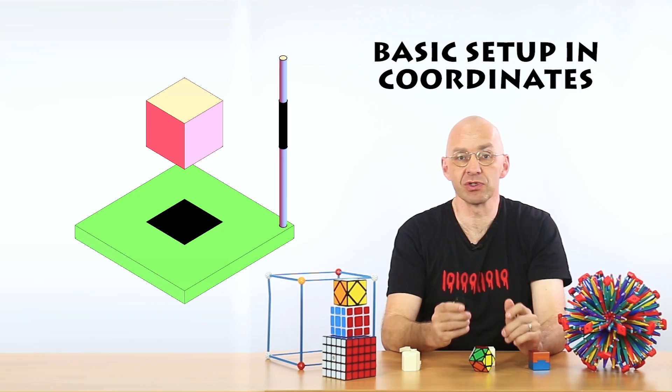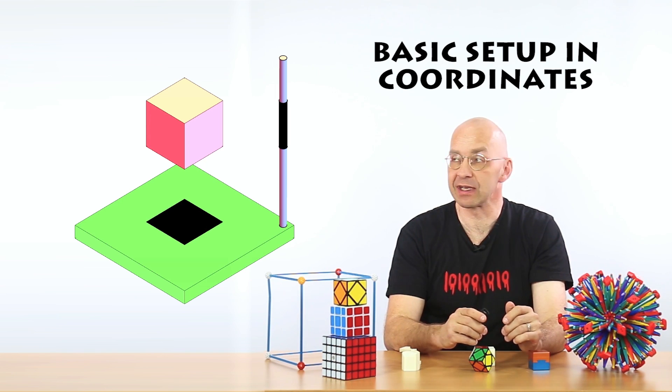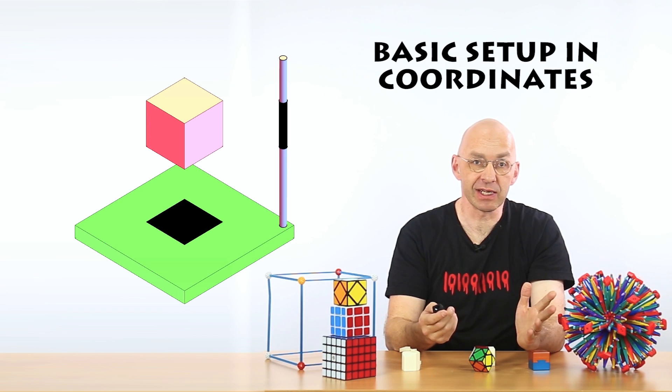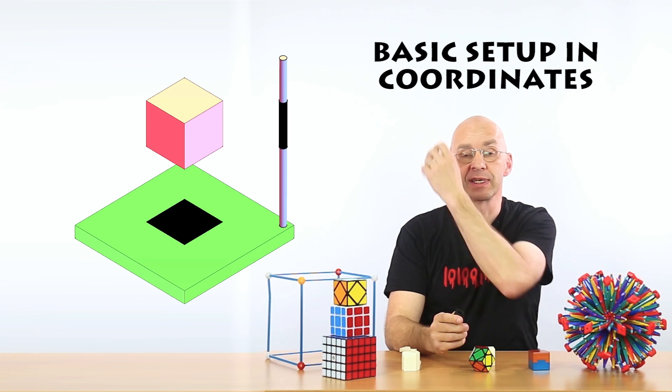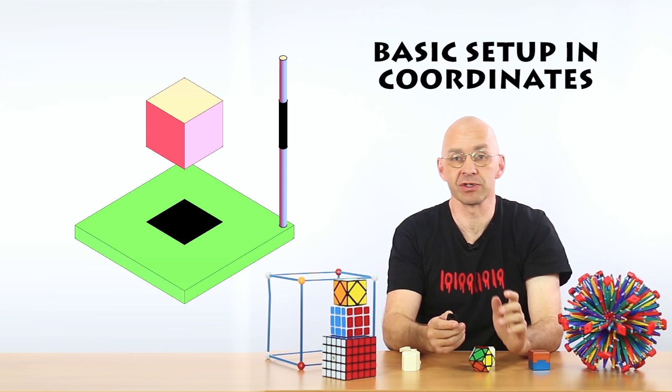Anyway, so what we have to do is we have to have another look at this very basic setup here. So there's the cube hovering above this plane and mathematically the plane is just the xy plane and this rod sticking out is the z-axis and we are casting a shadow onto the xy plane.